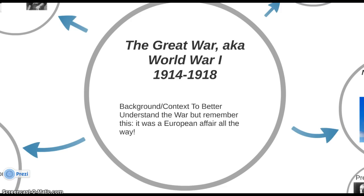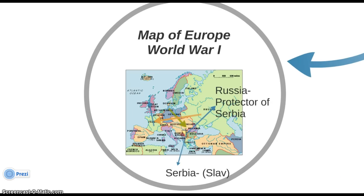The first thing to understand, as we look at the background and context, is that this was a European affair — a European war. The major European empires of Russia, Germany, Austria-Hungary, in addition to the Republic of France and the British Isles, were engaged in roughly 40 to 60 years of struggles — not outright war, but conflicts as each of them began to embrace industrialization and a capitalist society.